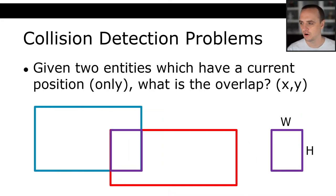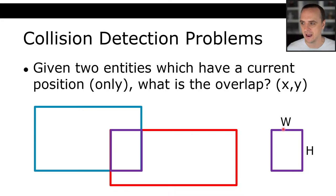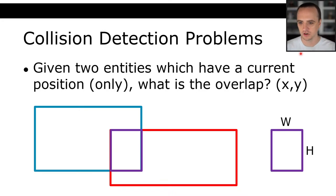The full form of the problem we're going to deal with is: given two entities which have a current position, what is the current overlap? If this purple overlapping section exists, then there is an overlap. If it doesn't exist, there's no overlap. If it does exist, we calculate it and know by how much these things overlap — how much in the x direction (the width of the overlap) and how much in the y direction (the height of the overlap). By the end of this lecture you'll know how to do this and how to resolve those collisions for assignment three.